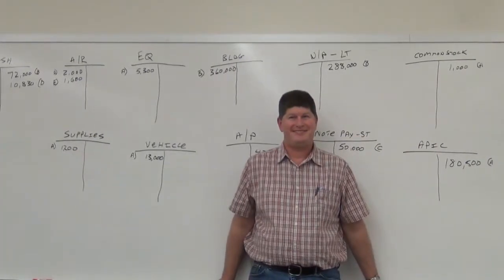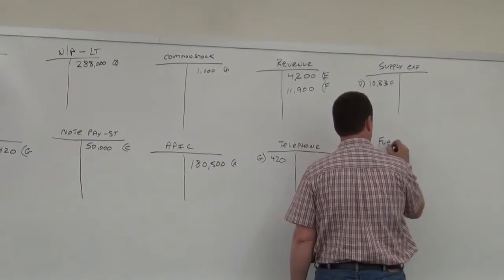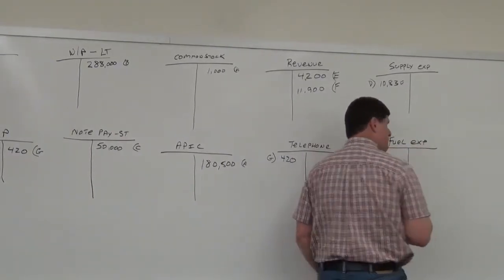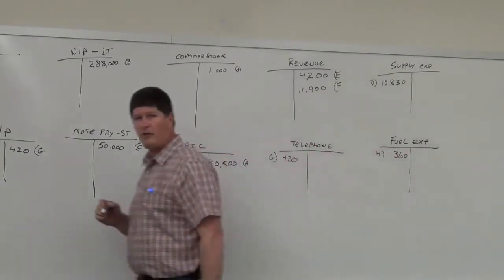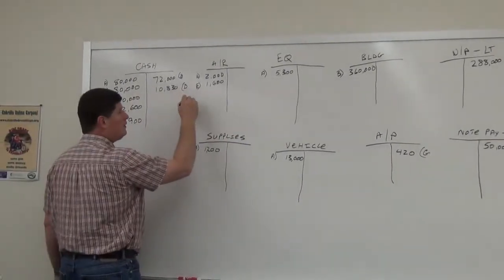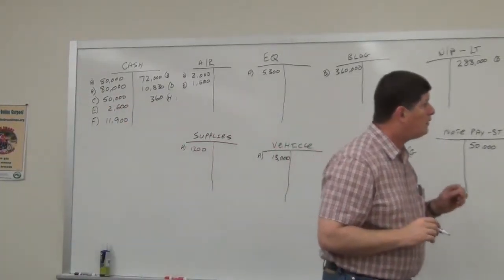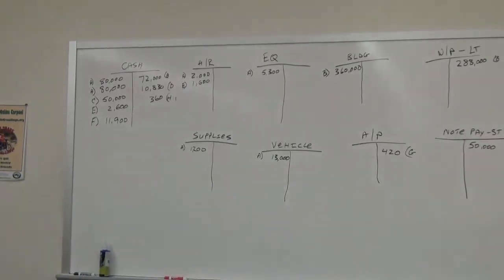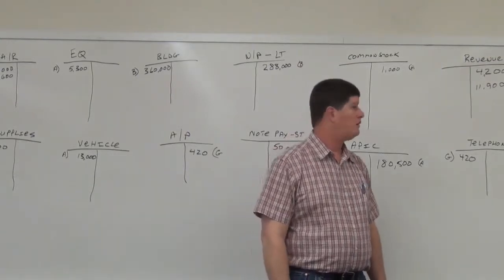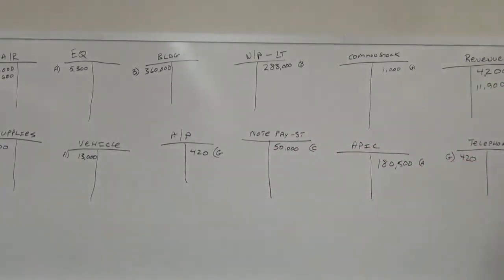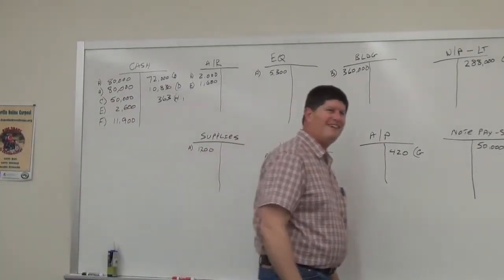Item H: Paid $363 in gas for the van in March. That's fuel expense, which increases as a debit — $363. We paid for it in cash, so cash decreases as a credit for $363.